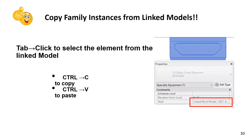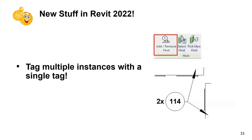Regarding linked models: a co-worker recently had trouble recreating a complex stair from a linked model. What we did was Tab-click to select the stair, then Ctrl+V to paste it into the destination model — done. Easy way out. And when you copy and paste a family from a linked model, it comes in as a full family that you can work with normally.